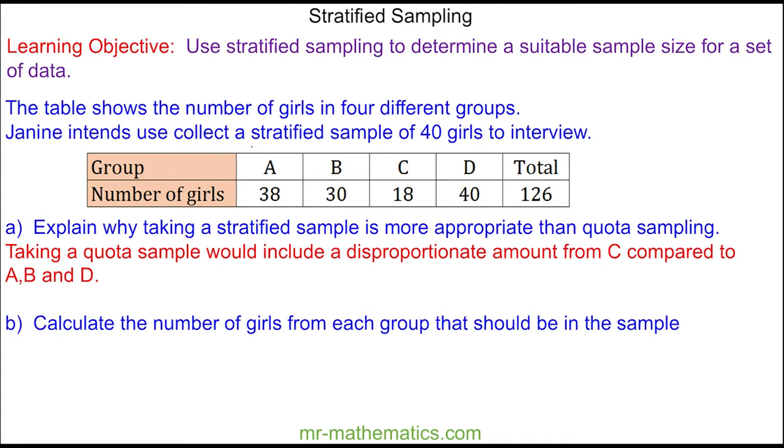To do this, we are told we are going to collect a stratified sample of 40 girls. So this is 40 out of the total 126. This fraction is our proportion, and we are working out this proportion of 38 girls in group A. So in group A we are going to sample 12 people.